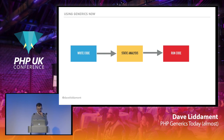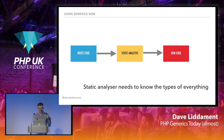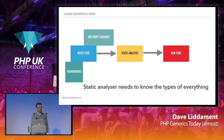As a summary for this section: we would add static analysis to our process — write the code, run static analysis, then run the code. Our static analyzer needs to know the types of everything. If we're interfacing with a framework or third-party library, we might have to give that information somehow — through clean wrappers, stubs, or plugins.